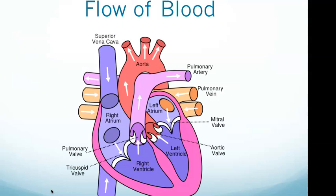The flow of blood is important to be familiar with. Starting at the left ventricle, blood flows to the aorta, then through the arteries and capillaries, and returns to the heart via the vena cava, entering the right atrium. It flows from the right atrium to the right ventricle, then through the pulmonary artery to the lungs.